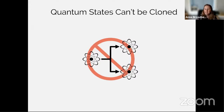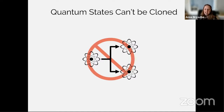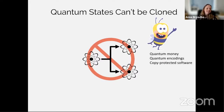Quantum states can't be cloned — we all know this. Many papers cite the no-cloning theorem as the fundamental reason why quantum key distribution is secure. In a sense, quantum unclonability is the reason why we're here today; without it there would probably not be a QCrypt conference. So I'm really grateful for unclonability and what it does for cryptography.